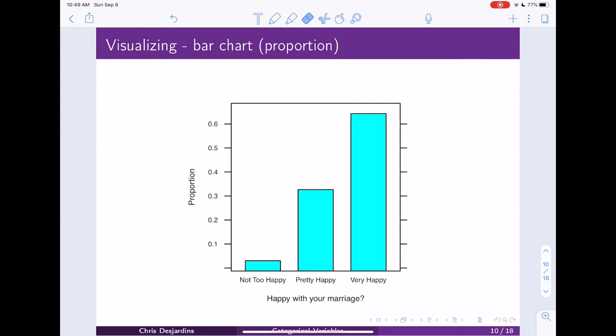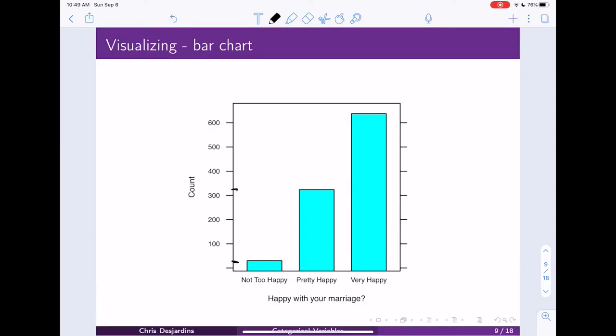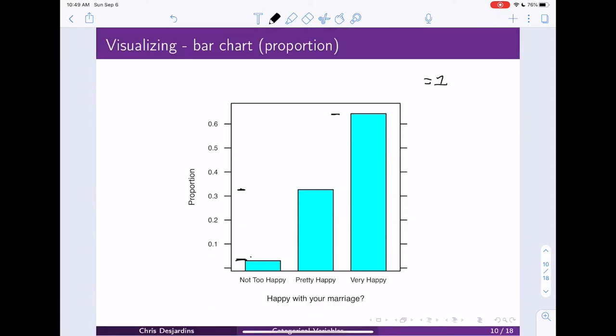And again, this number, this number up here, plus this number up here, plus this number up here are going to sum up to one. And that's a proportion. But over here, this number, this number, and this number are going to sum up to 922. So we're just taking this value and dividing it by 922, 922, 922, and we're getting this figure down here. So they're identical figures.